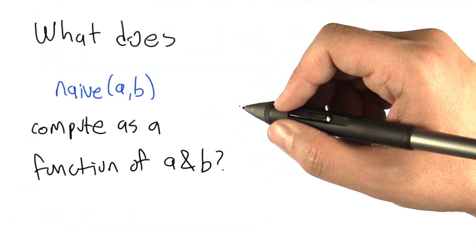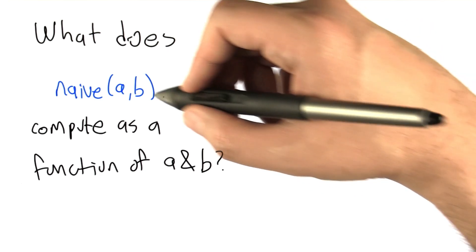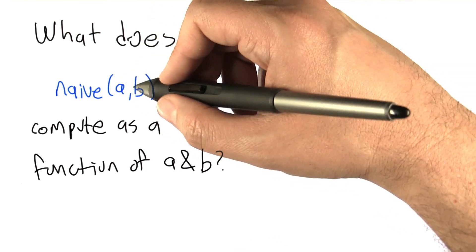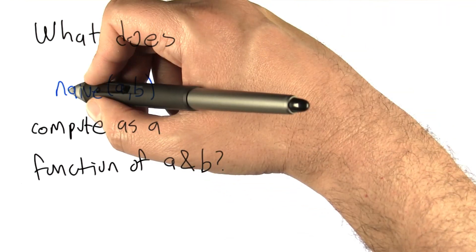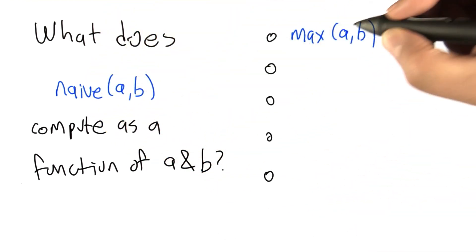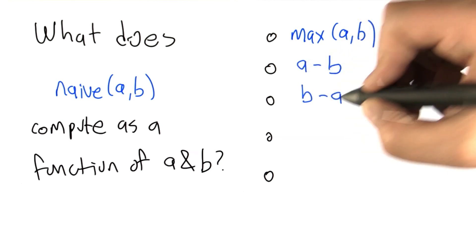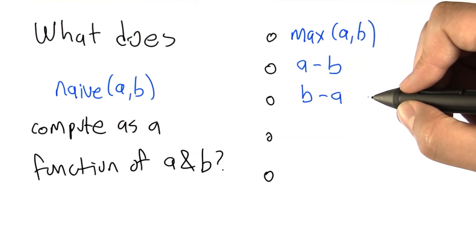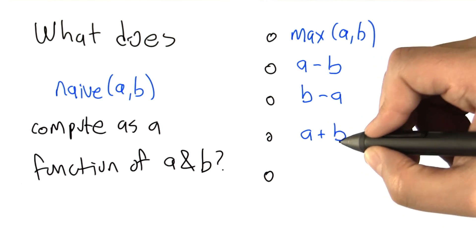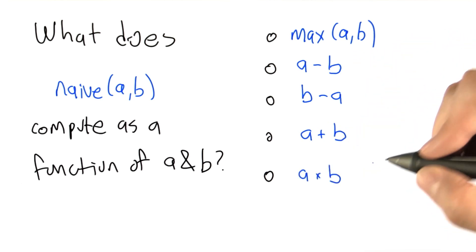So you can take this code and you can run it for any particular value of a and b. But I want you to think about what it does in general as a function of a and b when you run naive(a,b). Does it return whichever of a or b is the larger one? Does it calculate a minus b? Or for that matter, does it calculate b minus a? Does it calculate the sum of a and b? Does it calculate the product of a and b?